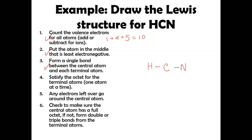Let's satisfy some octets. Right now I have four electrons in my Lewis structure. I need to satisfy the octet of the nitrogen because the hydrogen is already satisfied with two. So it's four — then five, six, seven, eight, nine, ten — and I ran out of electrons. Step five: any remaining electrons go around the central atom — can't do it because I don't have any more.